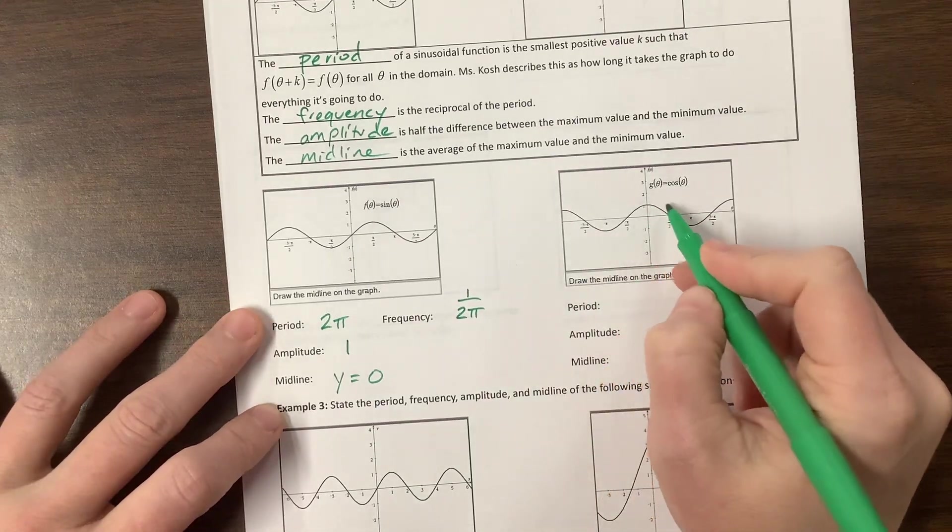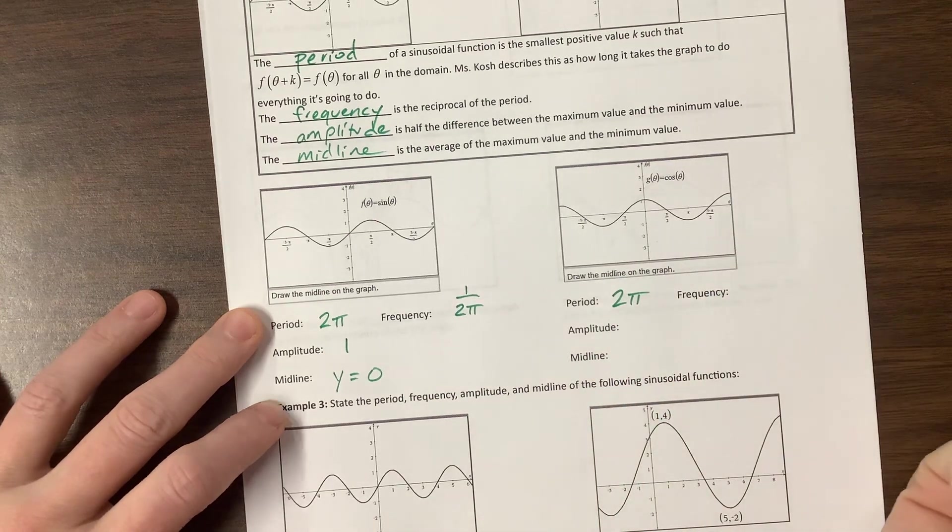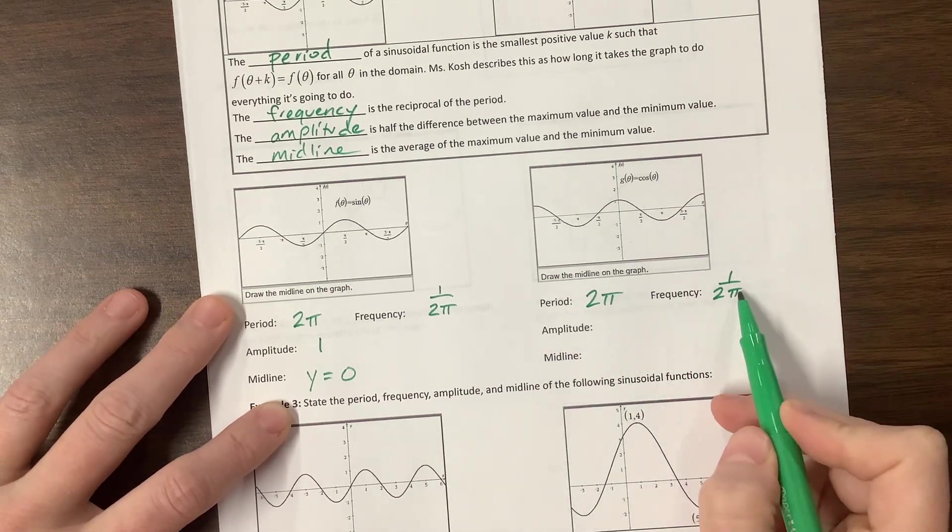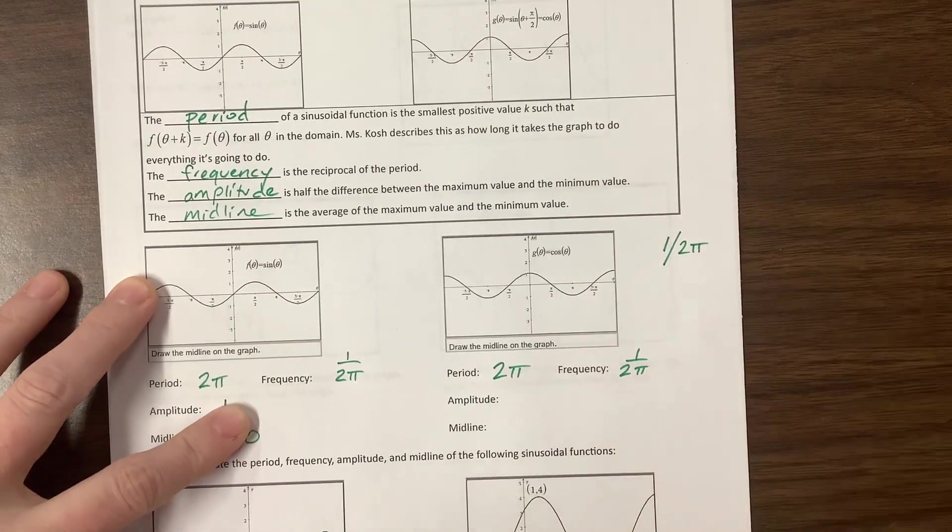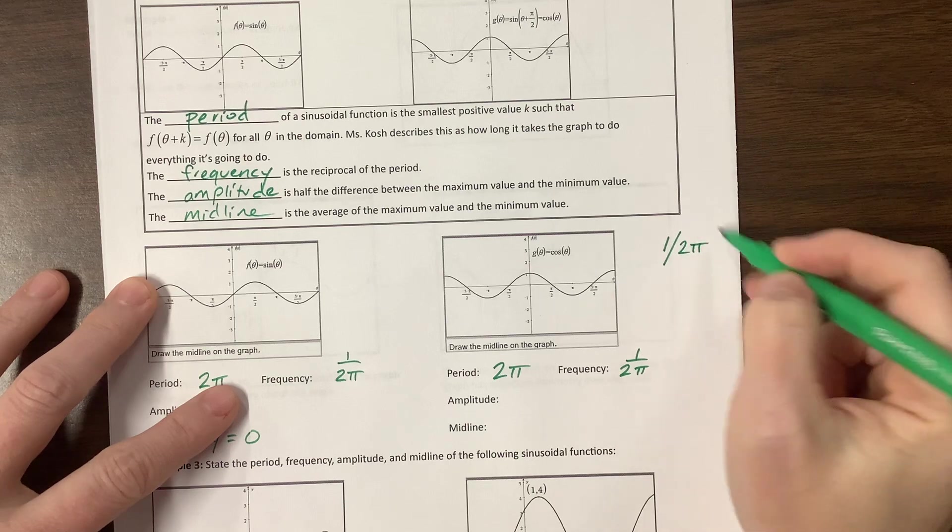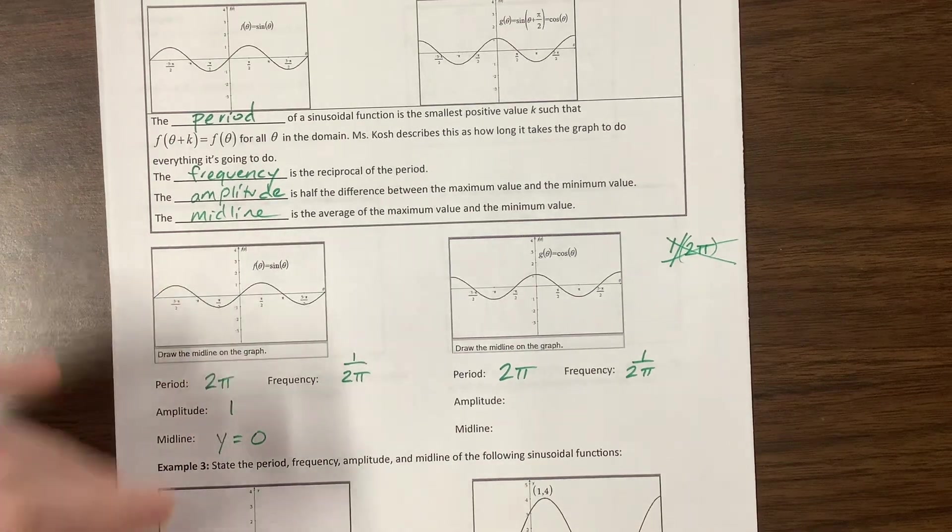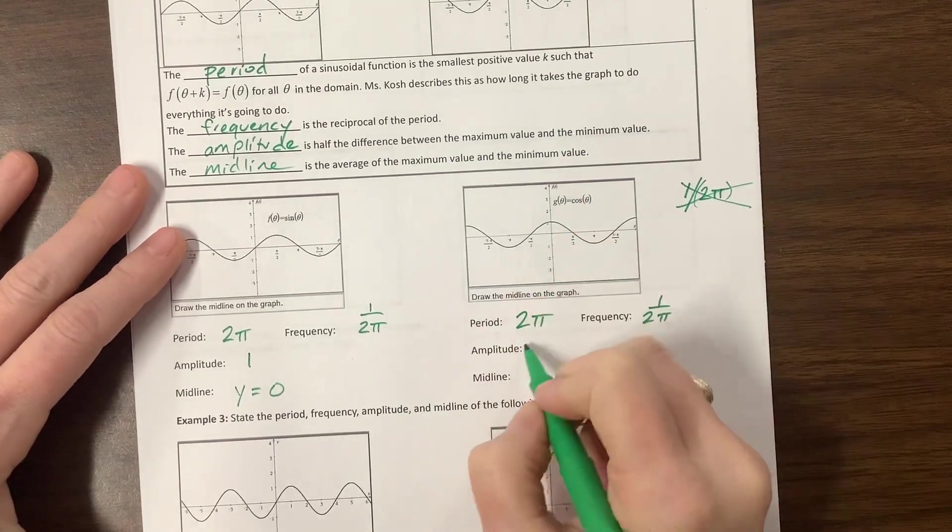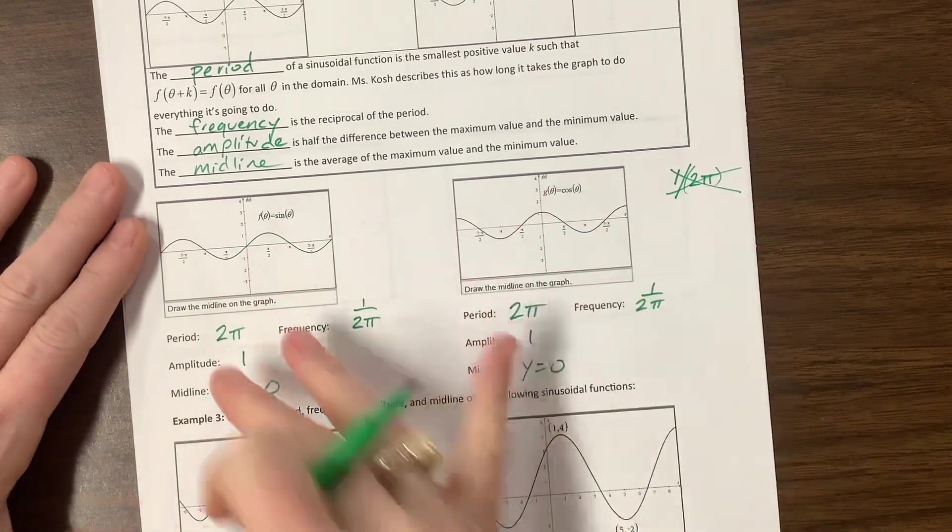Cosine is the exact same thing. It starts at the top, comes all the way down to the very bottom, comes back up all the way to the very top, and how long did it take? Two pi. Therefore, its frequency is the reciprocal, one over two pi. Be careful with notation—the two and the pi are both in the denominator. I would take off if somebody wrote this incorrectly. Let's avoid that entirely and write it this way, where it's very clear that both the two and the pi are in the denominator. Amplitude here, one; midline, y equals zero. Sine and cosine are kind of each other's buddies, they're just translations of each other.